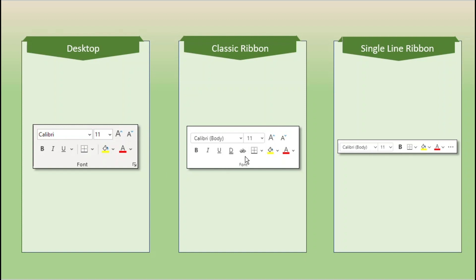The classic ribbon also has strikethrough. To find strikethrough for the desktop version, we would need to go to what is called the dialog box launcher. The dialog box launcher is this little arrow that is in the lower right of each group in our desktop application, and when we click on it, it usually takes us to a dialog box with all sorts of choices.